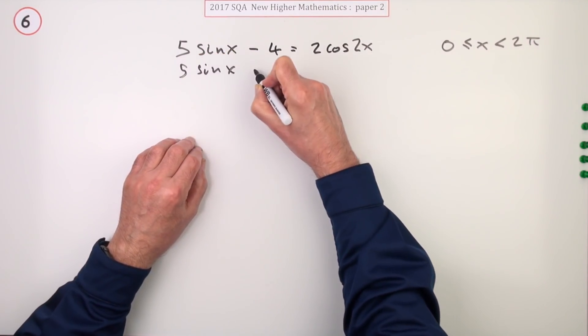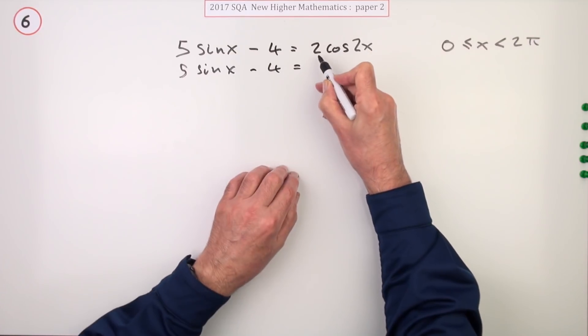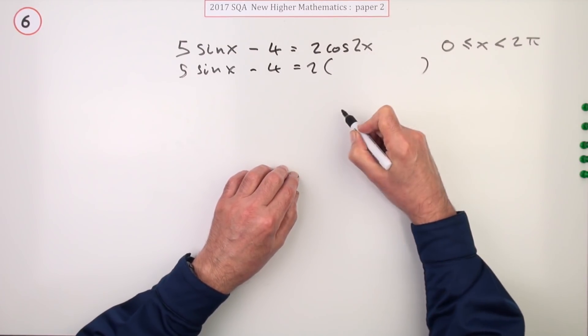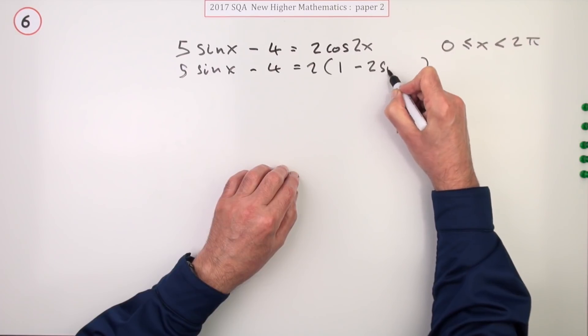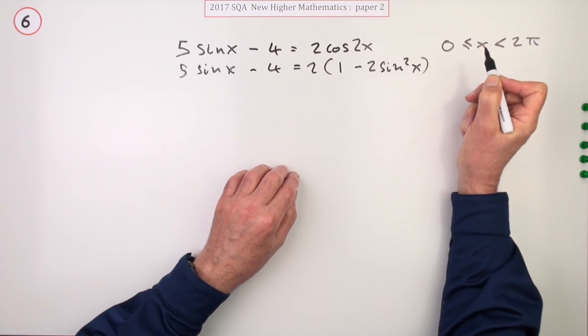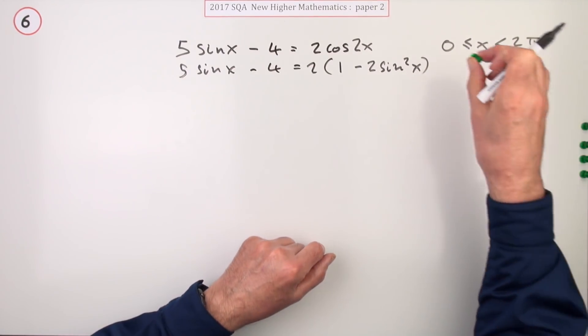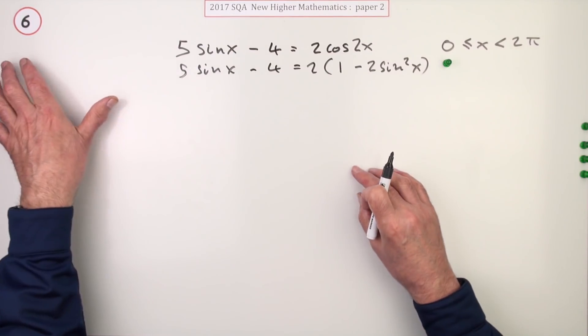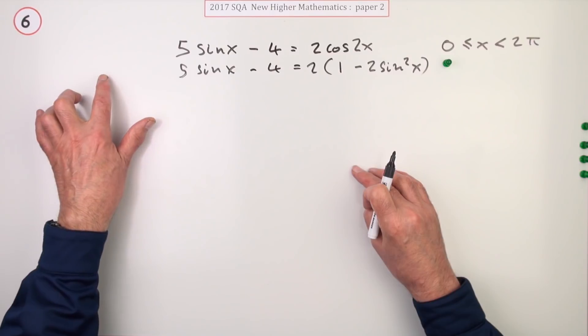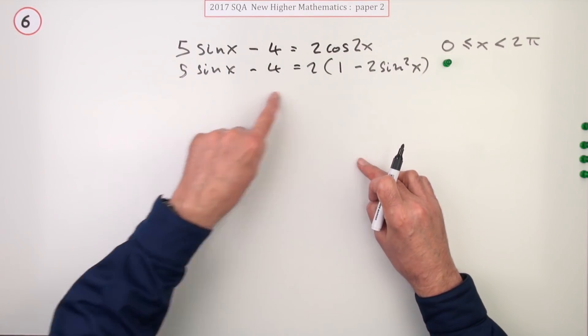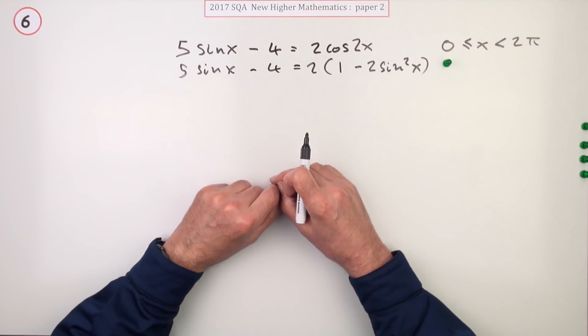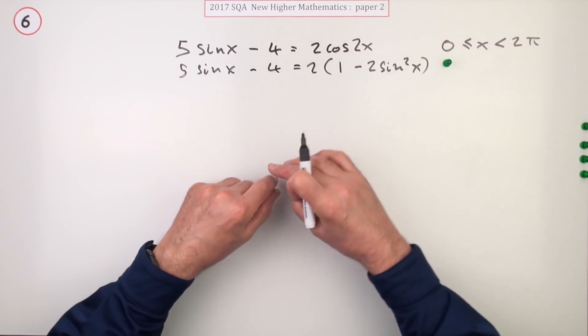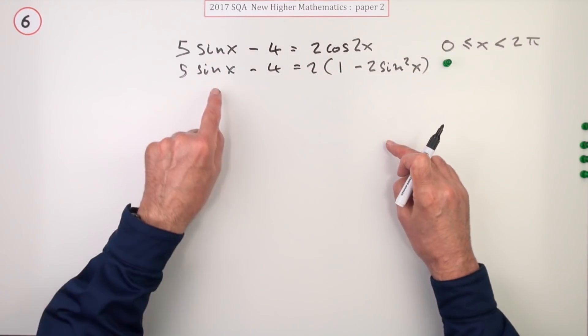Five sine x minus four equals, now notice it's two lots of it, it's going to be replaced by one minus two sine squared x. Doing that gets the first mark. You wouldn't get that mark just for stating cos 2x equals one minus two sine squared on its own without referencing it being substituted in. Now you just need to gather that all up because you've obviously got a quadratic in sine squared.